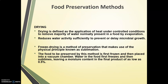The first method is drying. Drying is defined as the application of heat under controlled conditions to remove the majority of water normally present in a food by evaporation. By reducing the water activity, it sufficiently prevents or delays microbial growth. After drying, moisture content reduces to a large extent, increasing shelf life. Leaving foods out in the sun and wind is one of the earliest forms of food preservation, used by our ancestors for drying meats, fish, fruits, and vegetables.